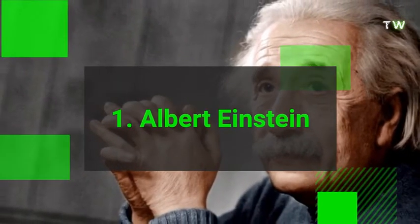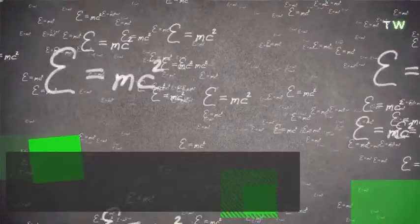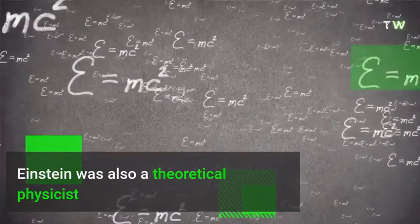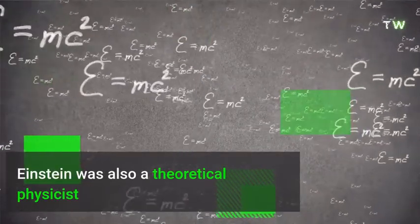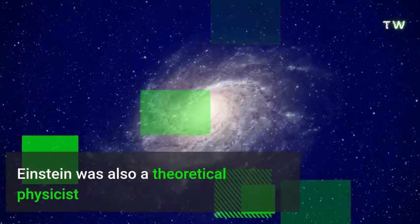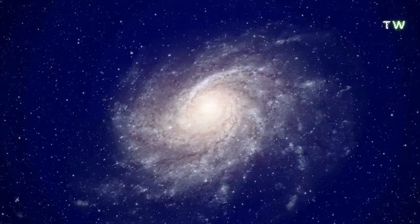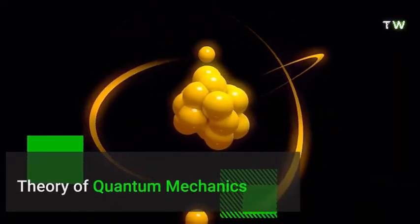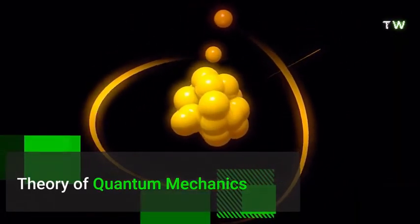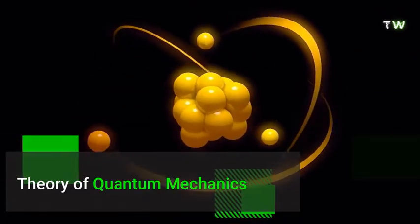Number 1. Albert Einstein. Are you surprised? We expect not. Nowadays, to call a person Einstein means to call them a genius, which this German-born scientist definitely was. Einstein was also a theoretical physicist, coming up with ideas to explain the workings of the universe. His most famous idea was his theory of relativity, followed by his contributions to developing the theory of quantum mechanics. And that's it! Our top 10 most intelligent people, past and present.